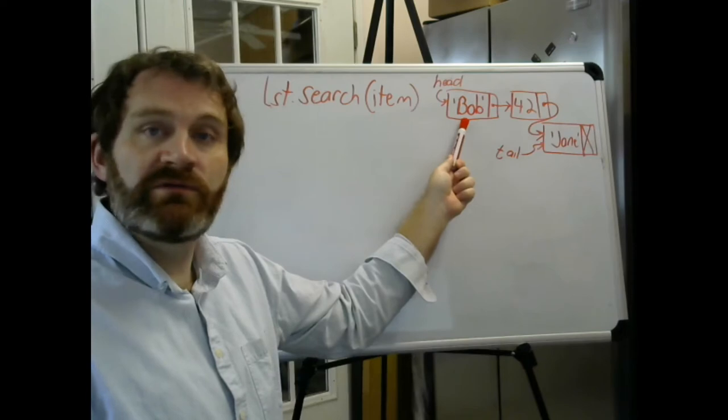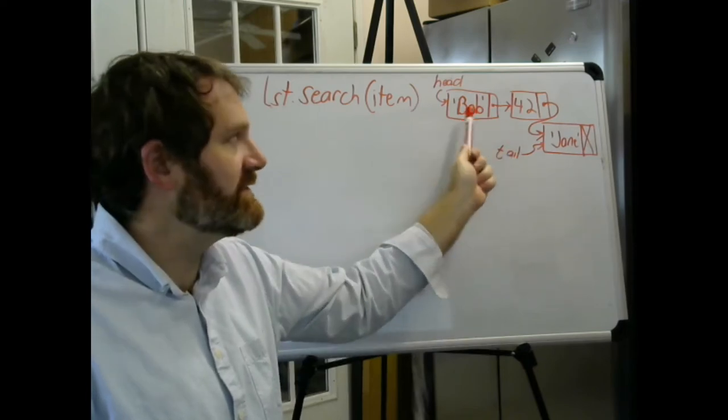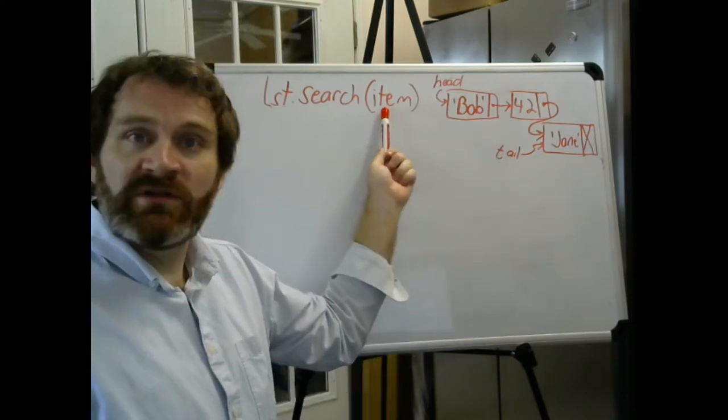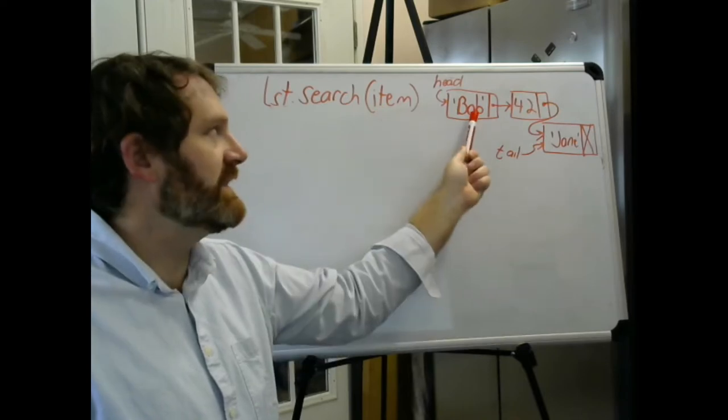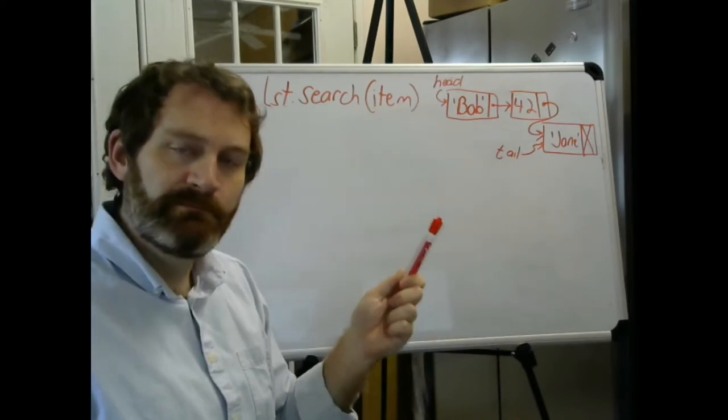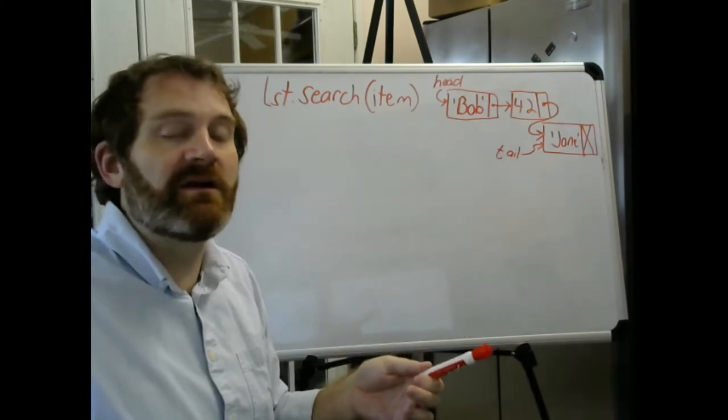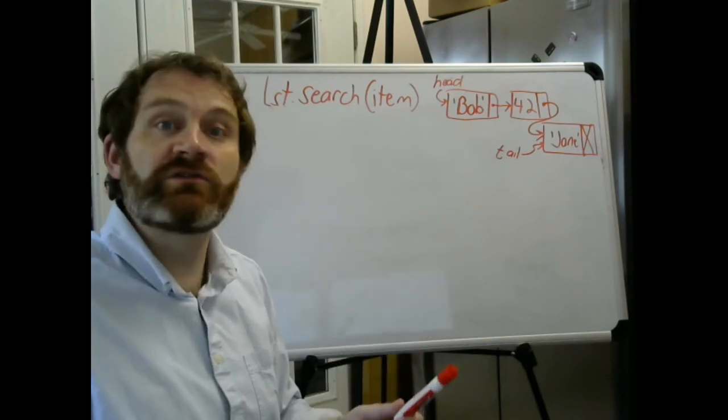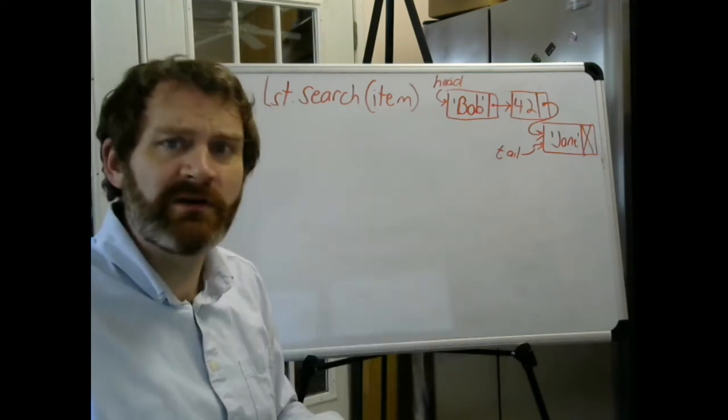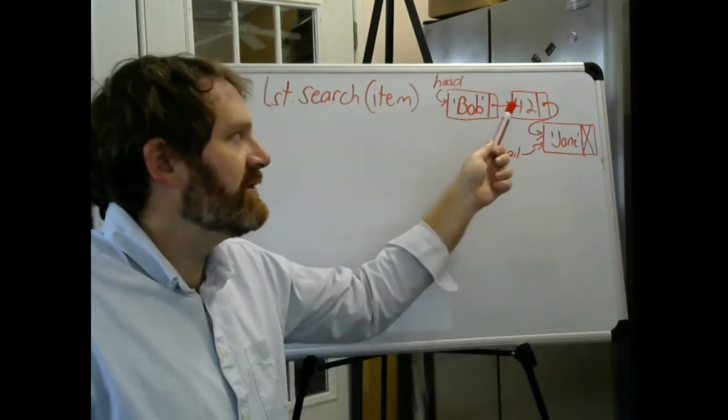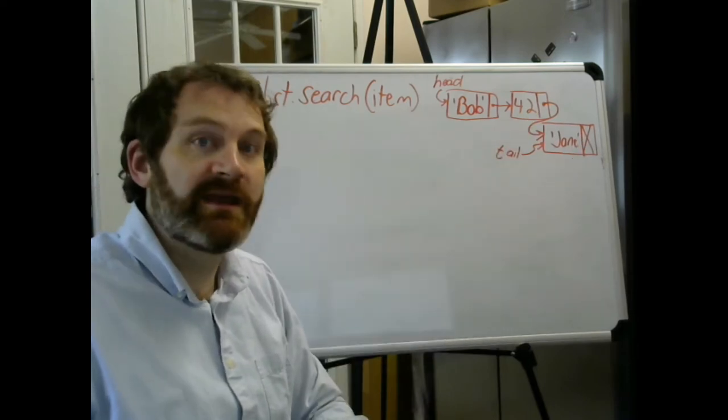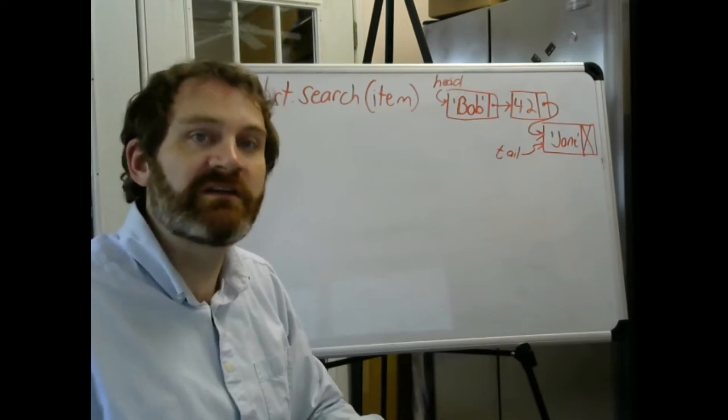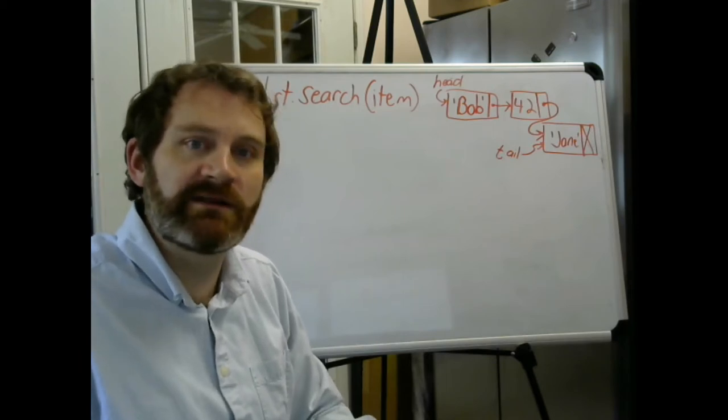What I need to do is go through each node in the list one by one and ask the question: is the item I'm looking for equal to the item that is stored in the node? If so, I have found the thing I was searching for. I'm done, I can return true.